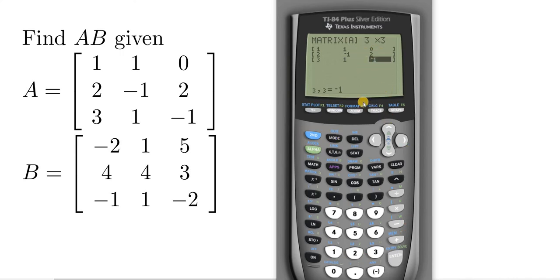So now we have to enter the other matrix. So I'm going to go back to matrix, go back to edit, and pick the second one. Did that pretty quick. So 3, 3. Feel free to pause the video as you enter your matrices. Negative 2, enter. 1, enter. 5, enter. 4, enter. 4, enter. 3, enter. It takes a bit of time. I'm going as fast as I possibly can. And there we go.